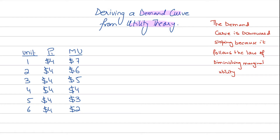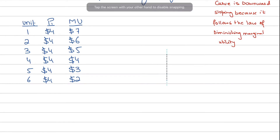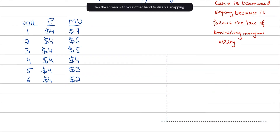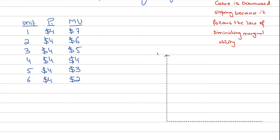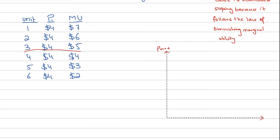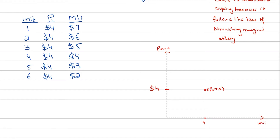I'm going to be plotting — let's not call it a demand curve first. Let's say I'm plotting price on the y-axis and units on the x-axis. If I'm consuming four units because the fourth unit gives me a utility of $4 and the price is also $4, then if the price is $4 and I'm consuming four units, this gives me one point on the graph. This point tells me that price equals MU at the fourth unit, satisfying the consumer equilibrium condition.